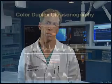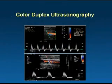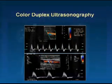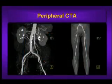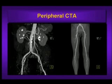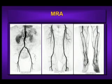Beyond the ABI, there are more sophisticated tests that we can do as well, including ultrasound tests, CAT scans, and magnetic resonance angiograms to actually get pictures of the arteries and locate the blockages.